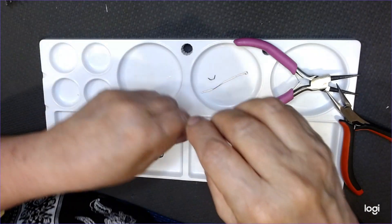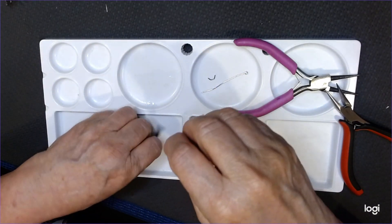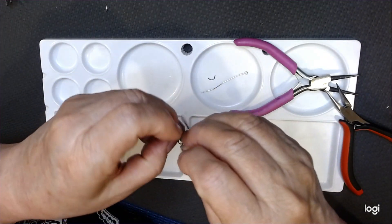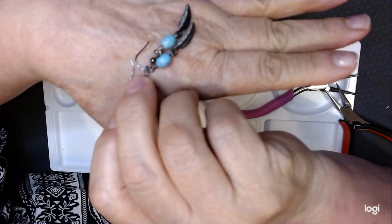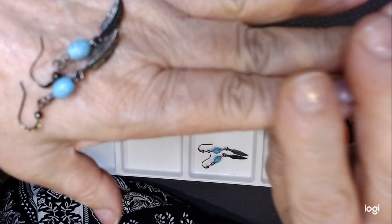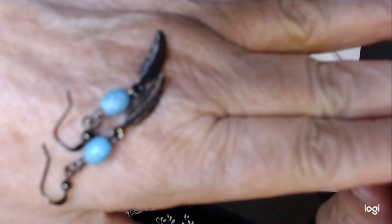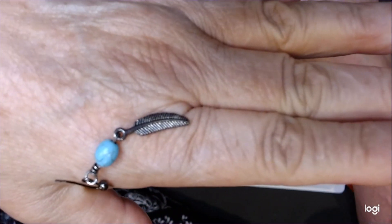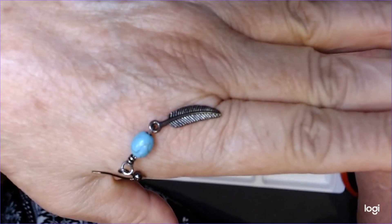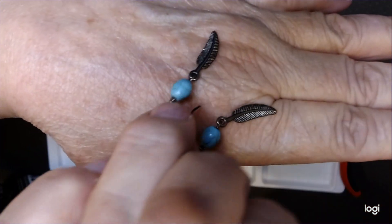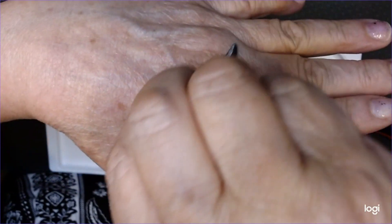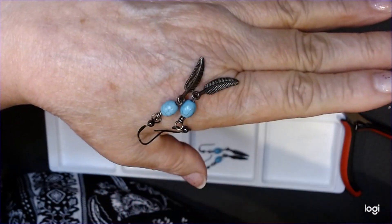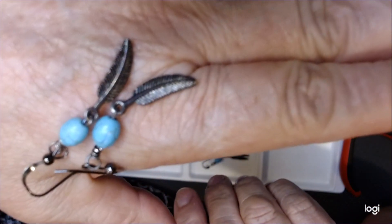Now we have a set of earrings. Can you believe it was that quick? I didn't time myself. But I know that was quick. But there we go. A cute little pair of earrings. The feather style. There we go. Cute little feathers.